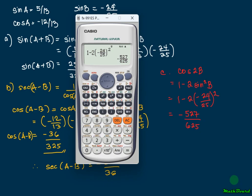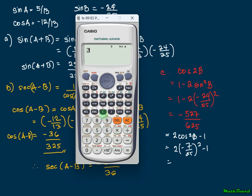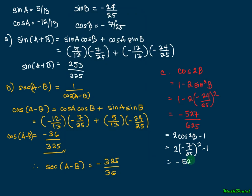We can also verify using the formula 2 cosine squared B minus 1. Using cosine B equals negative 7 over 25: 2 times (negative 7 over 25) squared minus 1 also gives negative 527 over 625. Both formulas give the same answer, confirming the result.